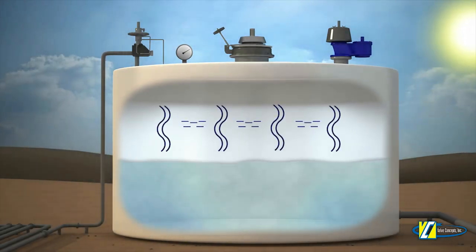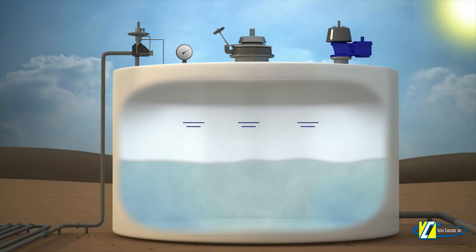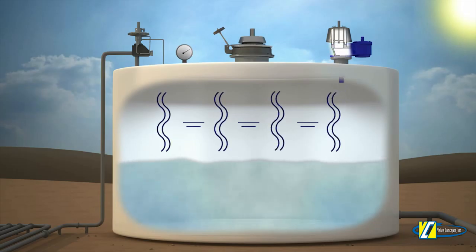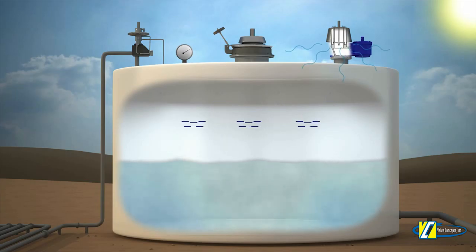As the sun rises in the morning, the vapor space inside the storage tank will naturally begin to heat up, causing the pressure inside the tank to build. As this pressure begins to build, the pressure side of the PV vent will begin to open, alleviating the tank pressure to a safe level.